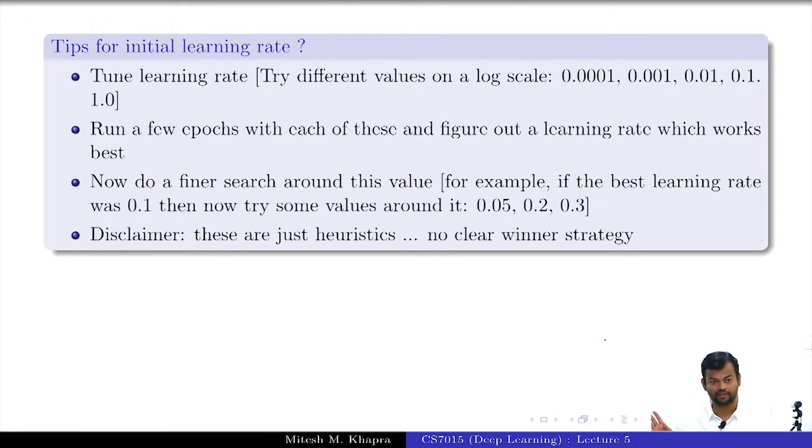These are just heuristics. There is no guarantee that will always work or which of these is a clear winner strategy, but you have to try this. Tuning a learning rate is an important part when you are working in deep learning, at least when you are working with gradient descent or NAG or momentum based gradient descent.